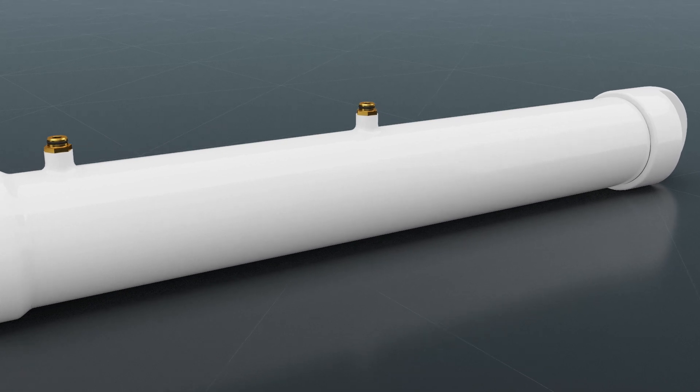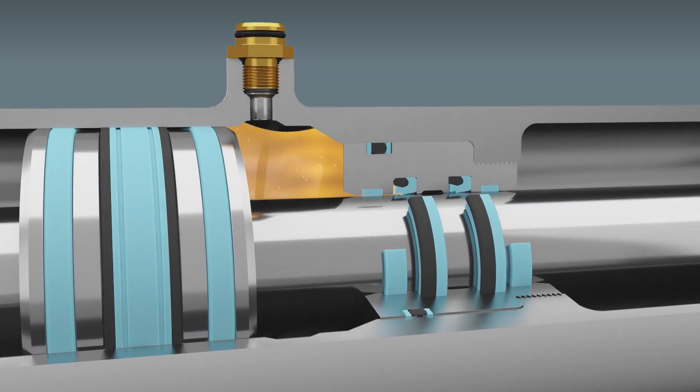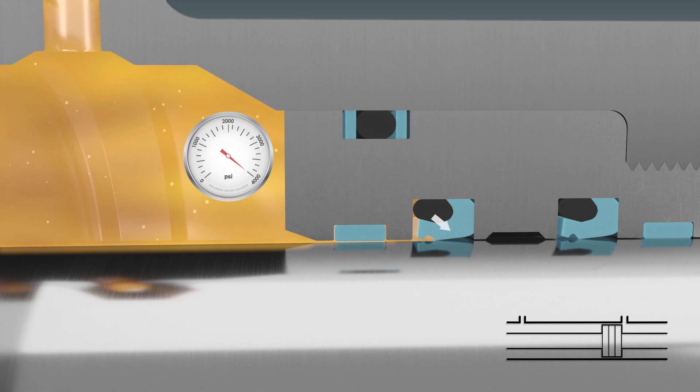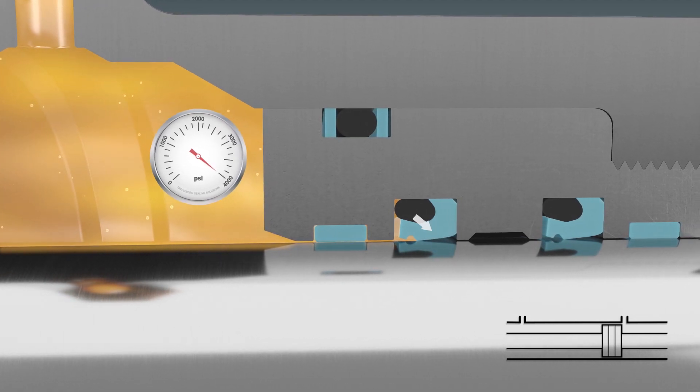Let's take a closer look at the Turcon VL Seal 2 to see how this works. Under pressurized conditions, the rod moves, the seal activates.